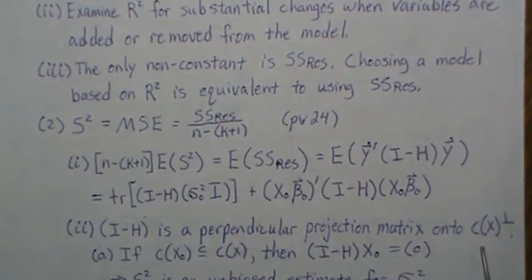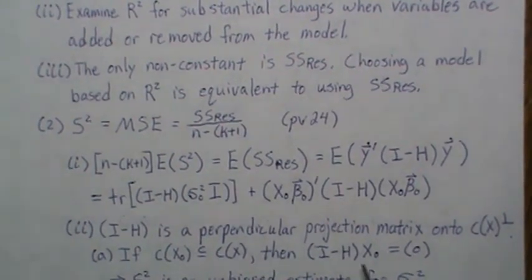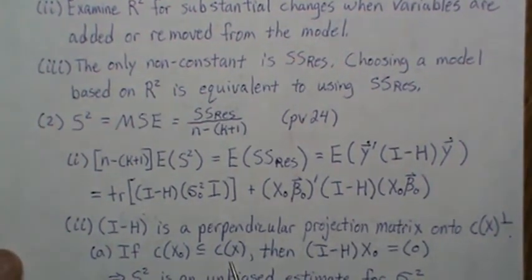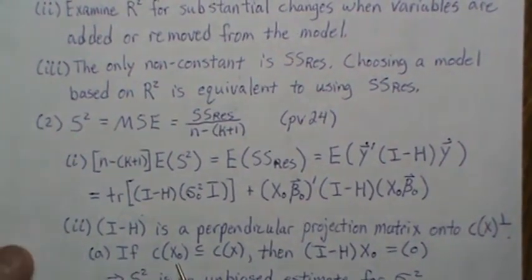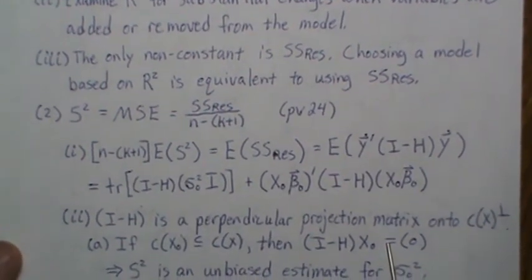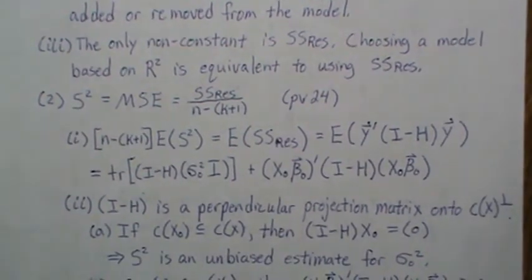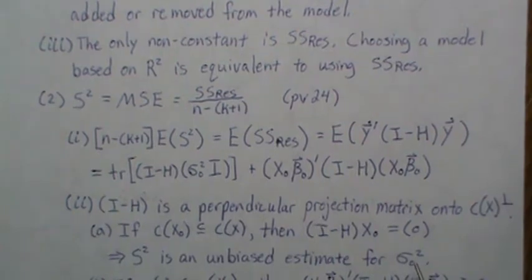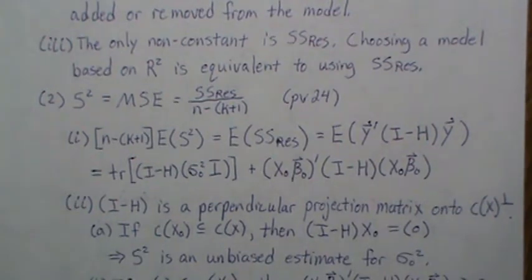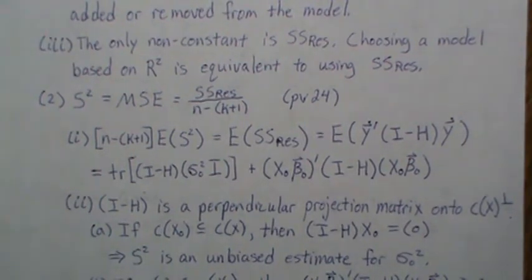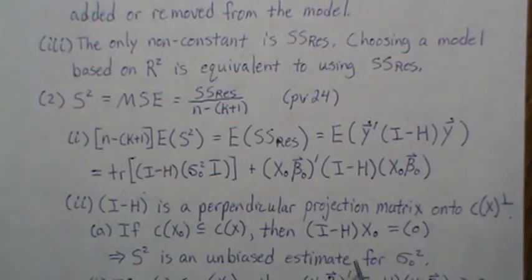If we're overfitting the model — meaning we have more variables in the model than the true model — then that quadratic term is zero, which implies that S squared is an unbiased estimate of the error variance. The reason is that I minus H is a perpendicular projection matrix onto the column space of X, so any vector in the column space of X pre-multiplied by I minus H goes to zero. Since we've overfitted, the true mean is in the column space, so that term must be zero.